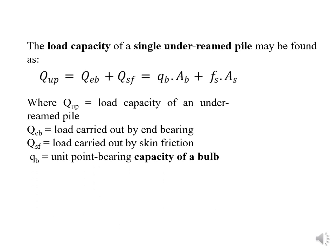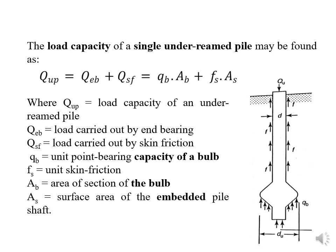Load equals stress multiplied by area. QB is the unit point bearing capacity of the bulb at the bottom. So the end bearing load is QB multiplied by the area of the bulb. The skin friction load is FS multiplied by the surface area — that is, the perimeter of the shaft. FS is the unit skin friction, AB is the area of the cross-section of the bulb, and AS is the surface area of the embedded pile.